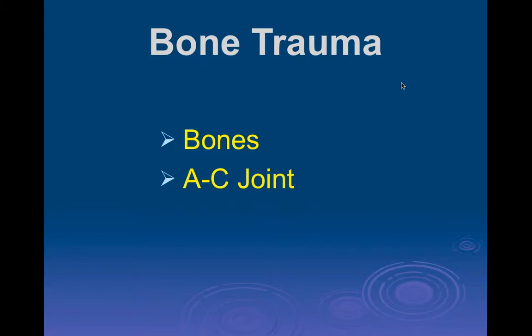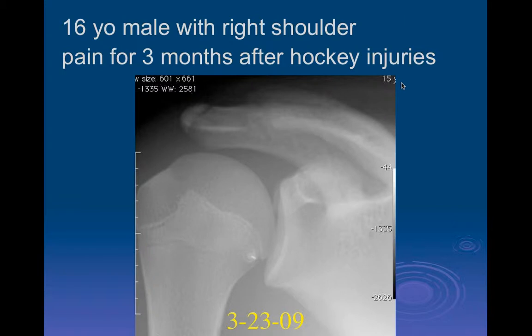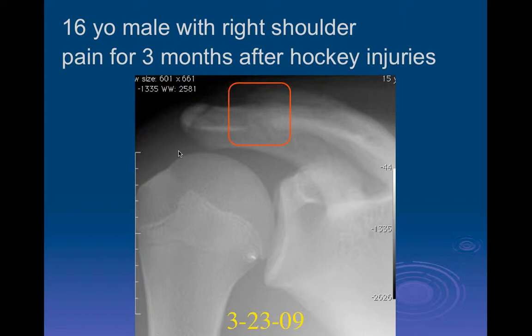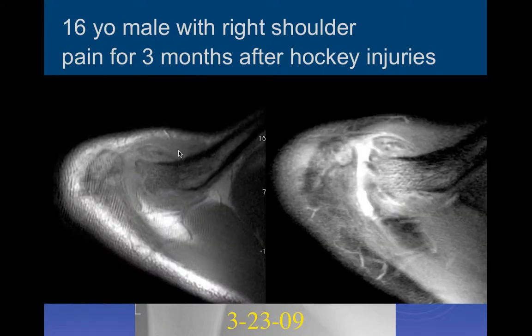Let's go into bone trauma. Here's a 16-year-old male with right shoulder pain for three months after a hockey injury. We have a single AP view of the shoulder. The humeral head looks okay and I don't think it's dislocated, though I only have one view. There's some irregularity of the distal clavicle and the AC joint. Since the patient is only 16, this could be an apophysis, but if it doesn't fuse later we should consider an os acromiale.